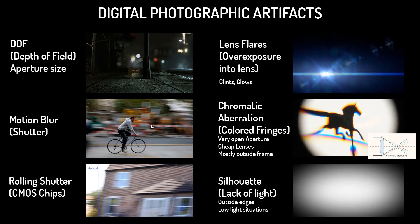Motion blur obviously has to do with the shutter itself, allowing for long exposures as each frame is exposed. If you take your camera, open up the exposure, and whip it with a whip pan, you're going to get a streaked image — and that's really what motion blur is all about.